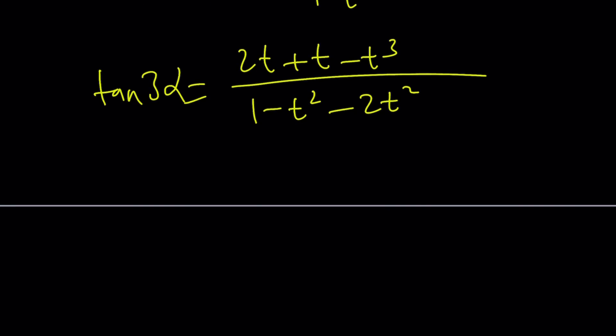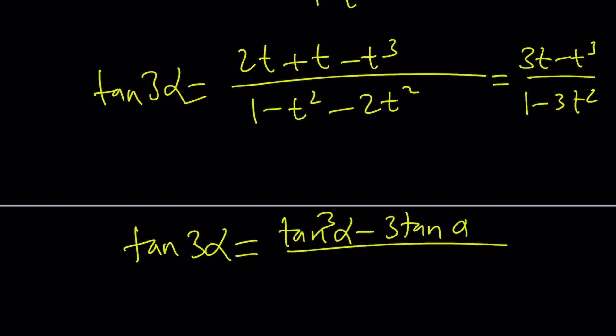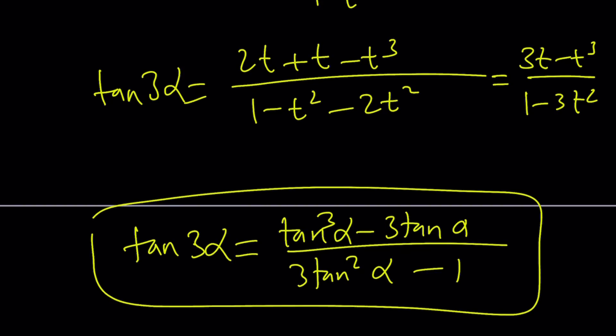So that's tangent 3 alpha. If you simplify this, you're going to get the following. And obviously, there's a way to make it better because if you negate the top and the bottom, it's going to look better. So tangent 3 alpha can be written as follows. Tangent cubed alpha minus 3 tangent alpha divided by 3 tangent squared alpha minus 1. All right? That's our triple angle formula.